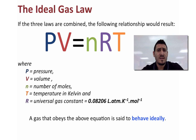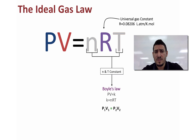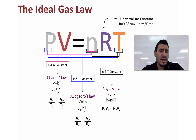In summary, PV equals NRT is the combination of the three laws discussed. If we hold number of moles and temperature constant, we get Boyle's law where PV equals constant. If we hold temperature and pressure constant, we get Avogadro's law where volume over number of moles equals constant. If we hold number of moles and pressure constant, we get Charles' law where volume equals a constant times temperature.